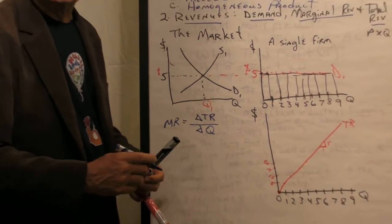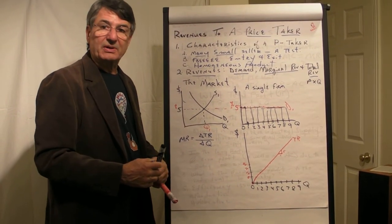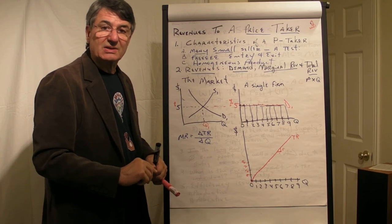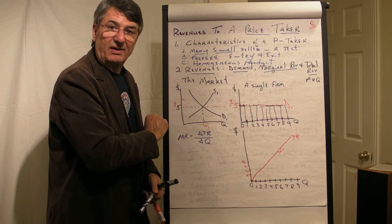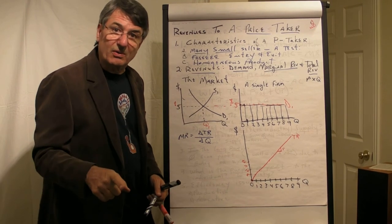it's saying because you produced and sold one more unit, what happened to your total revenue? And the answer, of course, is to a price taker, in this case, when the price is five dollars, every time they produce and sell one more unit,